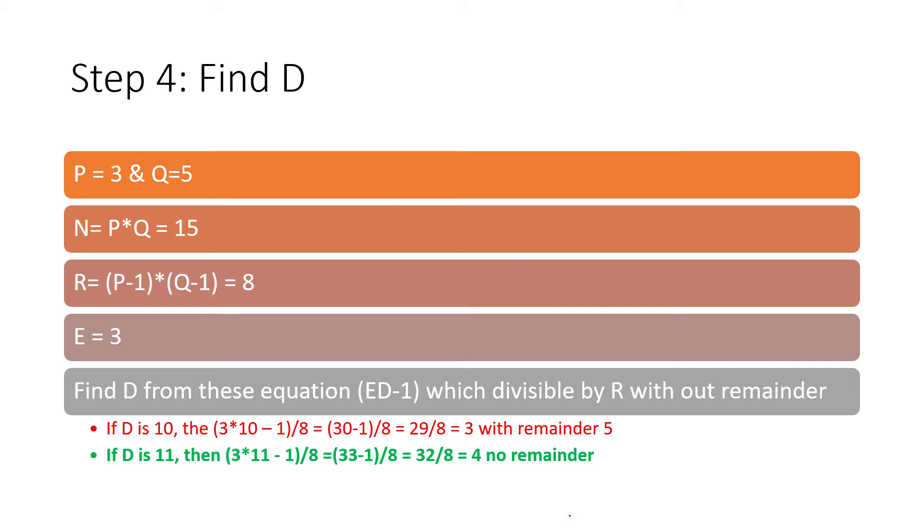Step 4 is find D. D is going to be your public key. So maybe it is complicated but it's not that complicated because to find D what you have to do is you write E multiple of D minus 1. Then the result of ED minus 1, when you divide it with the value of R, it should give you a result without a remainder. So you have to guess this value.